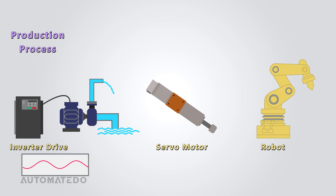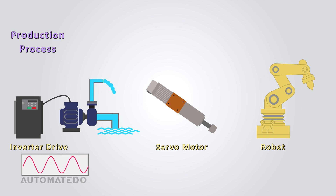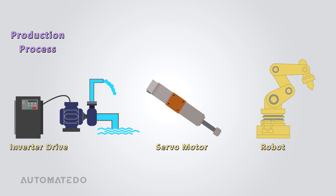Inverter drives control the speed of fans and pumps by adjusting voltage and frequency, conserving energy and minimizing mechanical stress. Servo motors provide precise control over positioning, making them ideal for tasks requiring fine movement in automation. Robots are programmable machines designed for complex jobs such as painting, assembly, and welding.